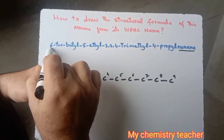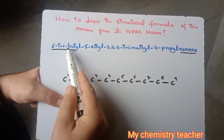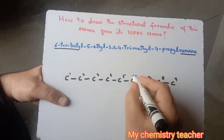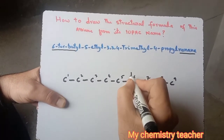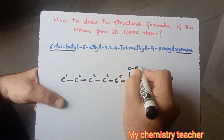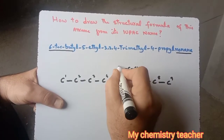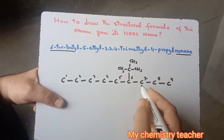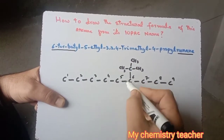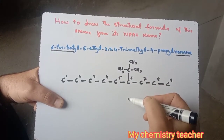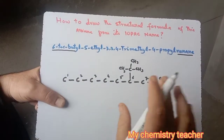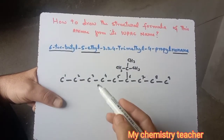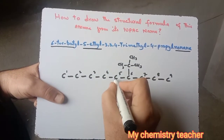Next, put the substituents on each carbon as indicated by the name. The first substituent in alphabetical order is tertiary butyl, located on carbon number six. So on carbon number six we place the tertiary butyl substituent — above or below the chain, it does not matter. Our next substituent is ethyl, present on carbon number five, so we place the ethyl group on that carbon.